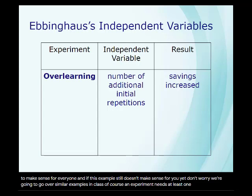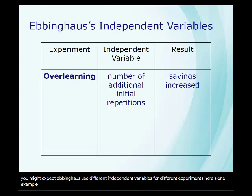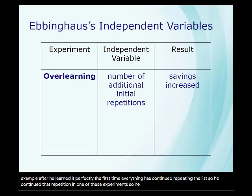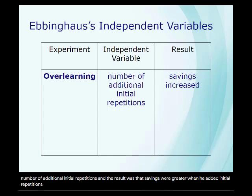Of course, an experiment needs at least one independent variable that the experimenter manipulated, in addition to the dependent variable they measured. Ebbinghaus used different independent variables for different experiments. In one example, after he learned a list perfectly the first time, Ebbinghaus continued repeating the list — that's over-learning. The independent variable was the number of additional initial repetitions, and the result was that savings were greater when he added initial repetitions. In other words, over-learning promoted retention.